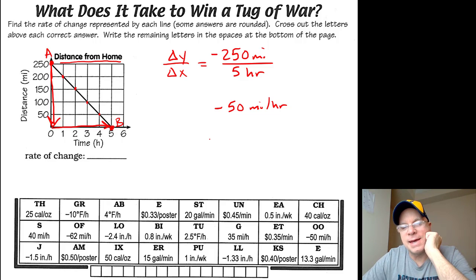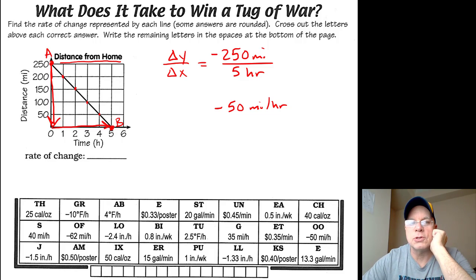It might seem like a ridiculous idea to be going negative 50 miles per hour. It's kind of like, how could you go negative 50 miles per hour? What, am I going 50 miles per hour in reverse? It's not that you're moving backwards.